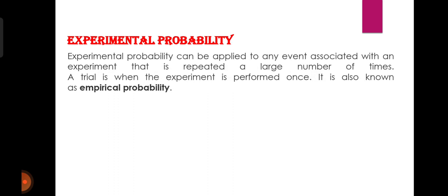About the different concepts of probability — different ways में probability को define किया गया है। सबसे पहले हम बात करेंगे about the experimental probability. Experimental probability can be applied to any event associated with an experiment that is repeated a large number of times. A trial is when the experiment is performed once. It is also known as empirical probability. यानि कि कोई भी event जो experiment से associated है, उस पर हम experimental probability को apply कर सकते हैं। जब हम experiment को एक बार perform करते हैं, तो वो एक trial कहलाता है। इसीलिए इसको हम empirical probability का नाम भी देते हैं।